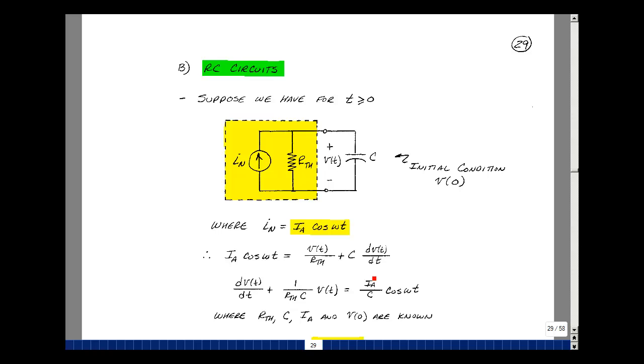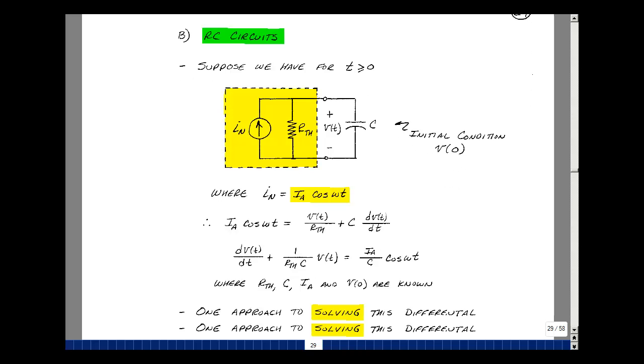Let's just rearrange terms here now. Let's divide through by C. So we've got a C here and a C over here. Put this term over here. Put this term over here. Put this term over here. So again, we've got a first-order differential equation with constant coefficients.